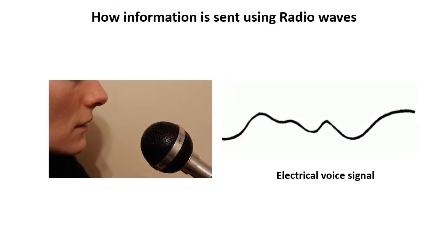So how do you send a signal or other information using radio waves? The information that you wish to send is first converted into an electrical signal. The information could be sound, a picture, or digital information, etc. If the information to be sent is a sound, then a microphone, as shown in the picture, is used to convert the sound waves into an electrical signal that represents the sound.